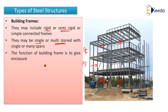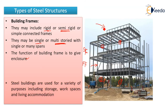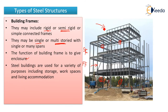The function of a building frame is to give enclosure, as you can see in the picture. Steel buildings are used for a variety of purposes including storage, workspaces, and living accommodation. You can even see steel-framed factories and structures constructed with steel building frames. This was the video on types of steel structures. Thank you.